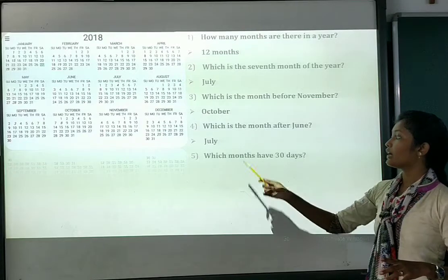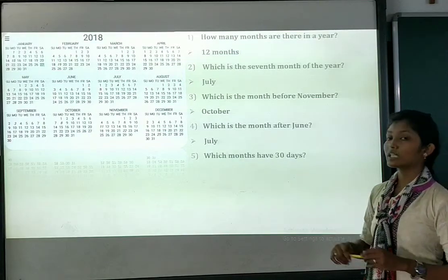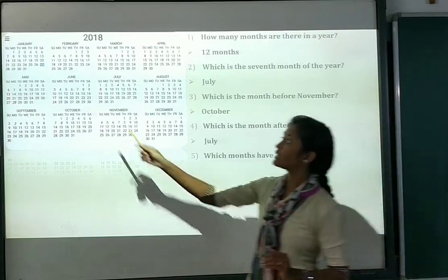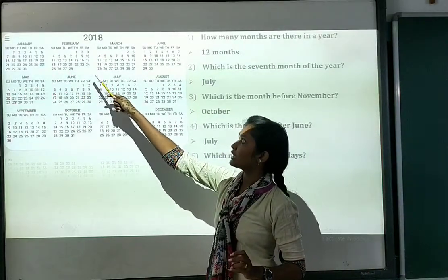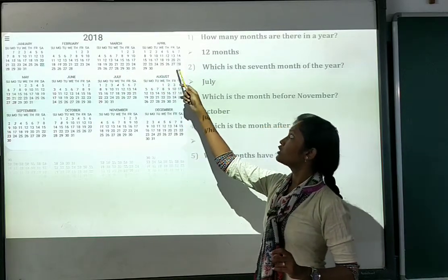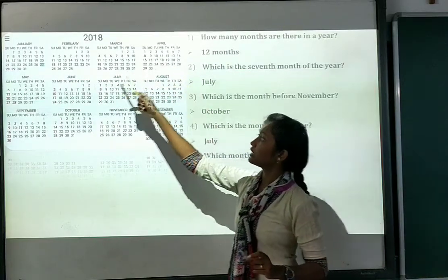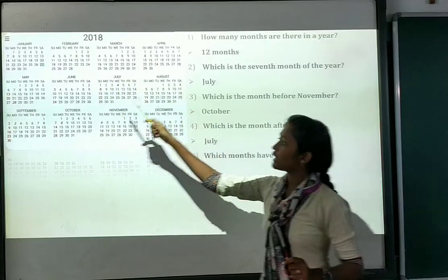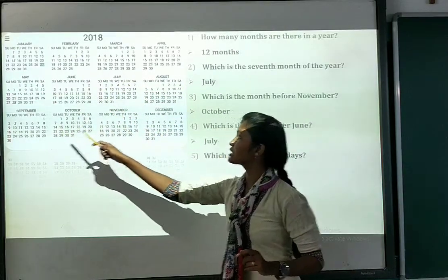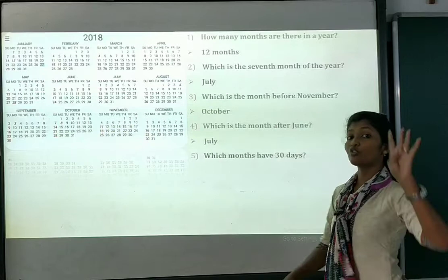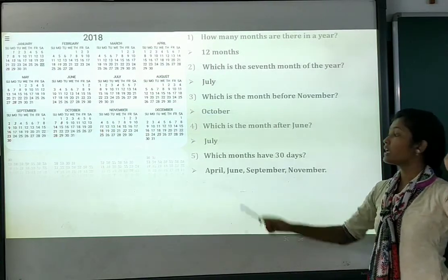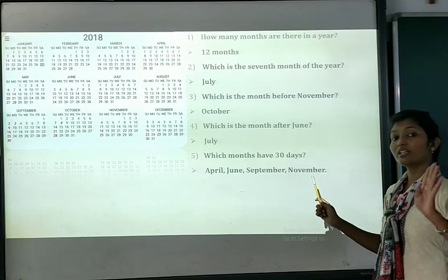Number 5: which months have 30 days? April is 30, June is 30, September is 30, and November is 30. So 4 months have 30 days. You have to write the names of those months: April, June, September and November.